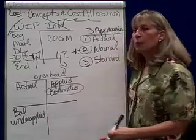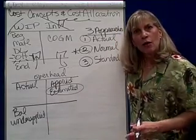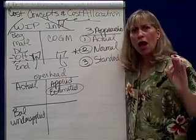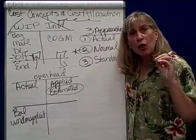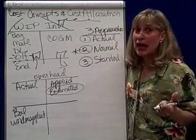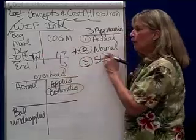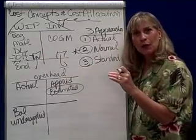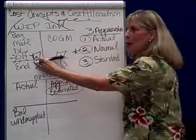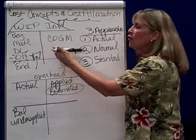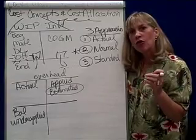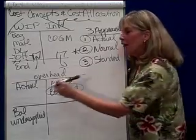If you underapplied, that creates a dilemma. We've promised our financial investors that cost of goods sold shows actual materials, actual labor, and actual overhead. But under normal costing, at the end of the period, cost of goods sold shows actual materials, actual labor, but only applied overhead. So as part of our closing entries, we have to adjust the cost of goods sold account so it reflects actual overhead.